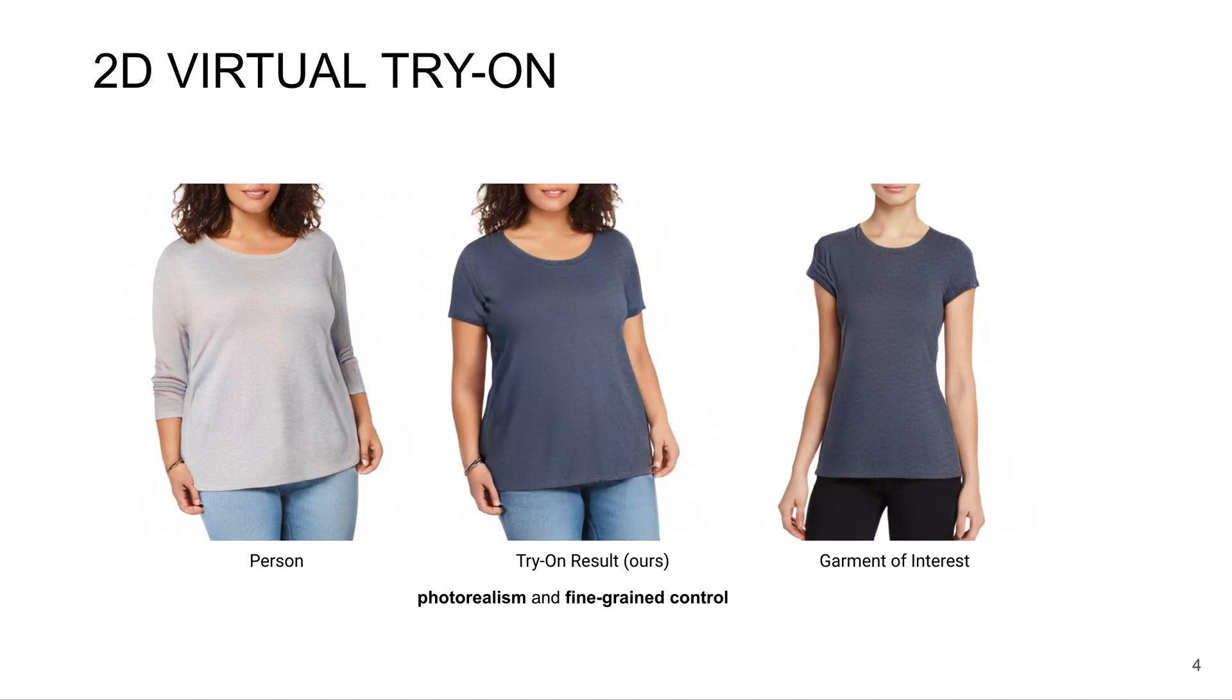So here's a result from our method. You can see we're able to preserve the identity, such as the face, hair, and skin tone. We're able to transfer the color and the shape of the shirt. We're able to synthesize realistic-looking folds, as well as skin on the arms that's consistent with her identity.